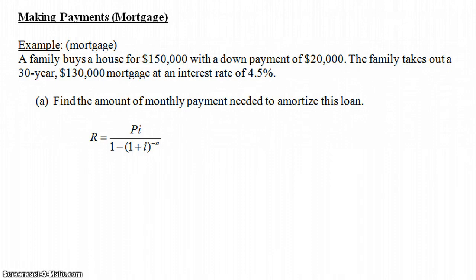In this video, we're going to talk about making payments on a mortgage. An example says this: a family buys a house for $150,000 with a down payment of $20,000. The family takes out a 30-year, $130,000 mortgage at an interest rate of 4.5%. The question is: find the amount of monthly payment needed to amortize this loan — in other words, what payments does the family have to make each month for the next 30 years to pay off this house?